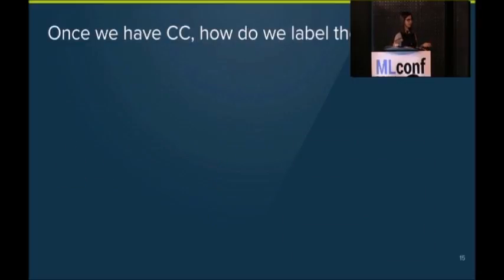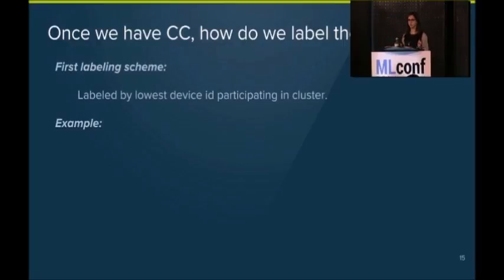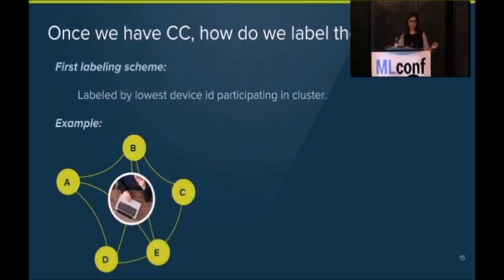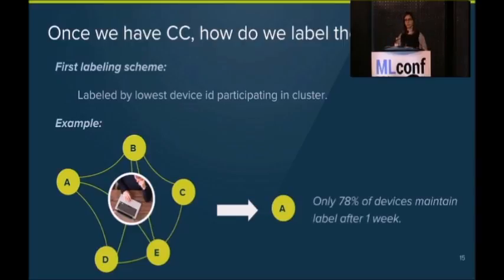So we have these connected components and we have them week over week and now we have a second problem. And the second problem is how do we go about labeling them? So the first labeling scheme that I just showed you is you take the minimum of your neighbors and you say, OK, that's my label. You're the leader. I'm going to follow you. That's my label. So, of course, if you have A, B, C, D, in the end you end up with a label of A. So if you do this for our data, we find something a little unfortunate. If you use this labeling scheme and you look at two graphs that you build one after the other, you find that only 78% of devices that are in both of your graphs maintain their label after a single week, which is not good. It's not something you sell to clients.